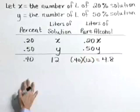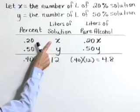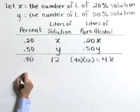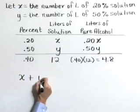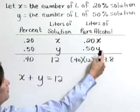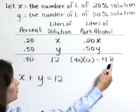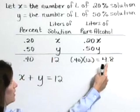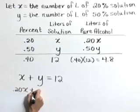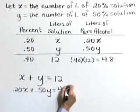Now we're ready to write our system of equations as step 3. I'm going to start right here. The sum of these two amounts, X plus Y, is equal to 12. Also, the sum of the amounts of pure alcohol in each of our containers should equal the amount of pure alcohol in the mixture. And so .20X plus .50Y is equal to 4.8.